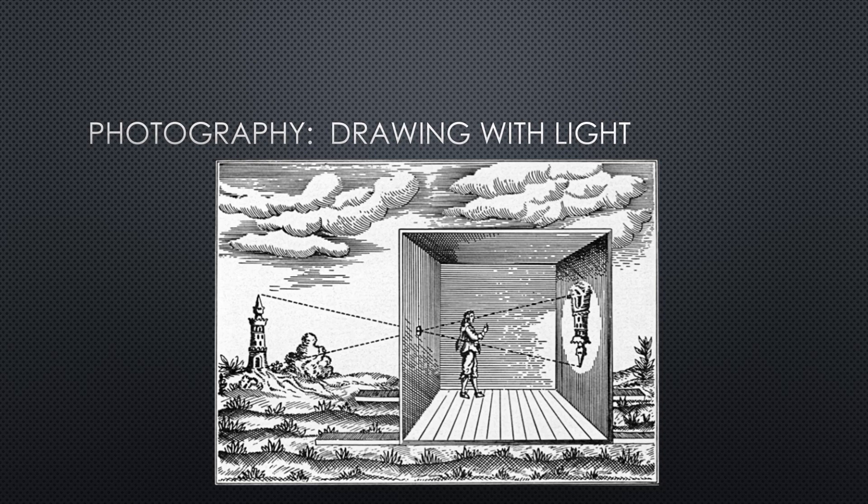So let's get into the exposure triangle. This takes us back a little bit in history. People were noticing as early as the fourth century BC that if you were in a dark room and had a small hole on one end of the room, the outside scenery would actually project through that hole and invert and show in mirror form, upside down, reversed on the far wall.